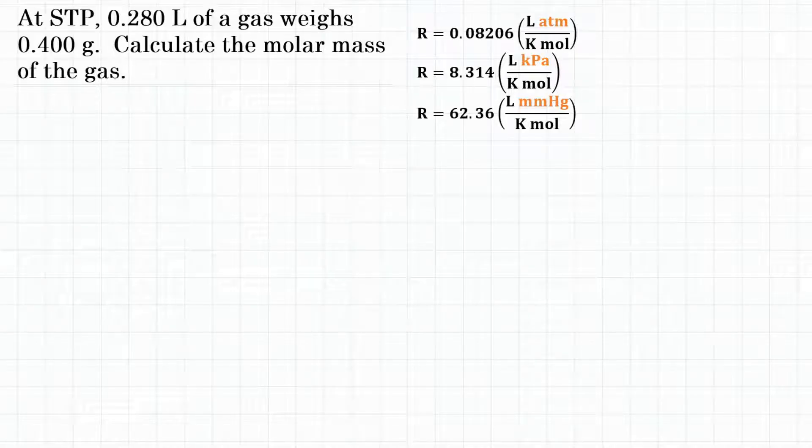At STP, 0.280 liters of a gas weighs 0.400 grams. Calculate the molar mass of the gas.